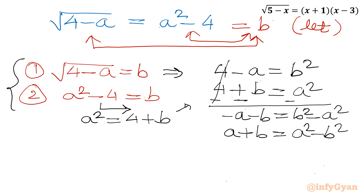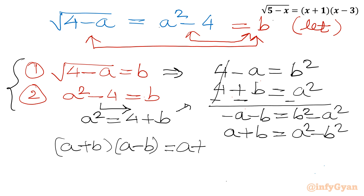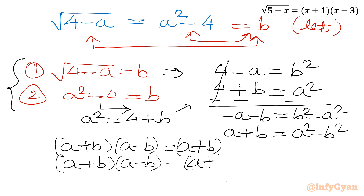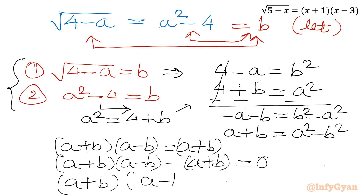Now a squared minus b squared equals (a plus b)(a minus b). So the right-hand side is (a plus b)(a minus b). Taking all terms to one side: (a plus b)(a minus b) minus (a plus b) equals 0. Taking (a plus b) as common factor: (a plus b)(a minus b minus 1) equals 0.